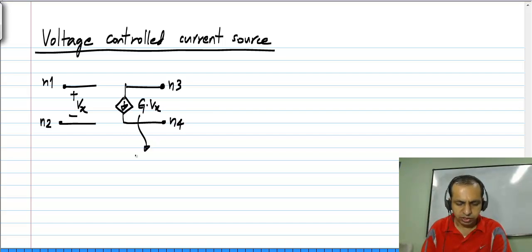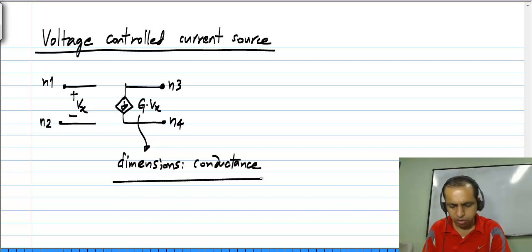Now this g obviously has dimensions of conductance, because it multiplies a voltage and results in a current it has dimensions of conductance. Sometimes this is called the transconductance of the voltage controlled current source.